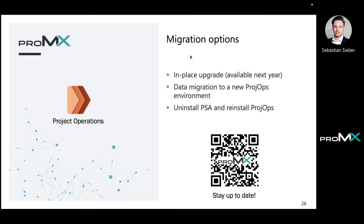Starting from the bottom option: uninstall PSA and reinstall Project Operations. This is mainly used in cases when you don't have much productive data. The problem is that when we uninstall PSA, the projects are also removed. When you reinstall, you may have to export and import your data. The tables and entities will be removed along with their data. Also, when you have a customized environment with custom plugins, workflows, or cloud flows, it gets difficult to uninstall PSA — especially when you're already running a productive system for years.